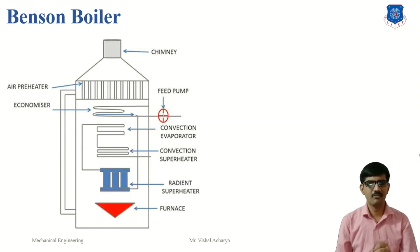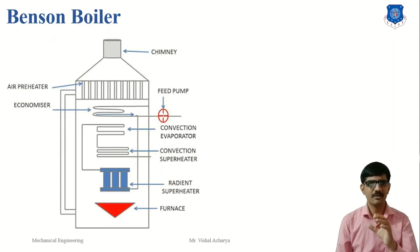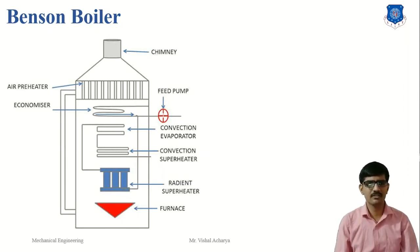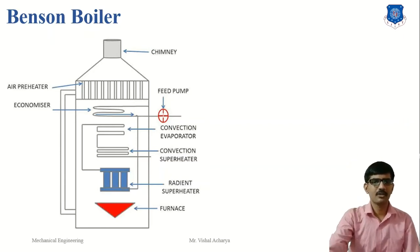The construction parts of the Benson boiler include: an air pre-heater, which preheats the air before entering the furnace and increases burning efficiency; an economizer, which heats the water to a certain temperature; a radiant superheater, which heats the water using radiation from the burnt fuel and raises it to supercritical temperature; a convection evaporator, which superheats water and converts it into steam using the convective mode of heat transfer. The convective superheater superheats the steam to the desired temperature of nearly 650°C. The furnace is where fuel is burned, and the heat pump supplies water at supercritical pressure of 225 bar.